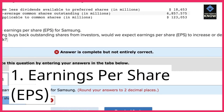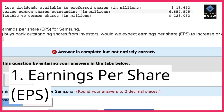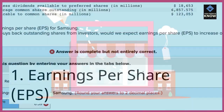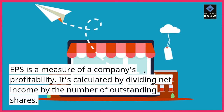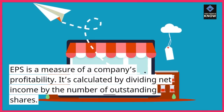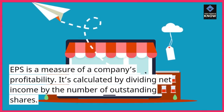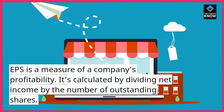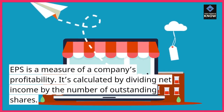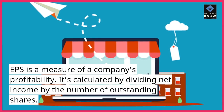1. Earnings Per Share (EPS). EPS is a measure of a company's profitability. It's calculated by dividing net income by the number of outstanding shares.